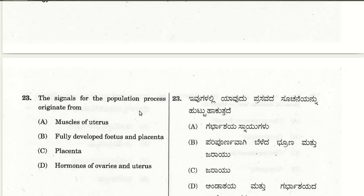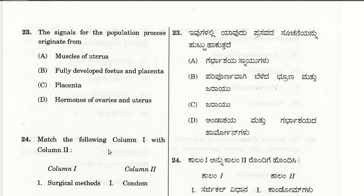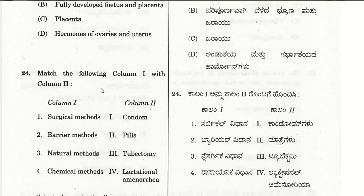The twenty-third question is a grace question because of wrong choices and absence of correct answers; grace marks are given. The twenty-fourth question: match the following — surgical method is tubectomy, barrier method is condom, natural method is lactational amenorrhea, chemical method is the respective option.